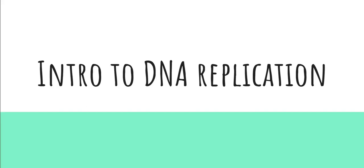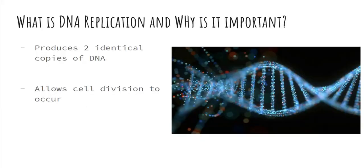Introduction to DNA replication. DNA replication is the process by which DNA produces two identical copies of itself. This is important because it allows cell division to occur.